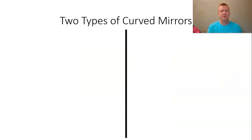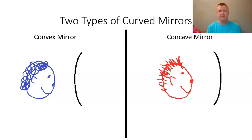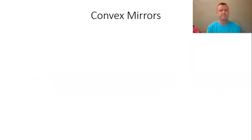The two types of curved mirrors are like the two sides of the spoon. When you're looking at the back of the spoon where it's curving out towards you, that's called a convex mirror. And then if you're looking inside the spoon where it's curving away from you, kind of like you're looking into a cave, it's called a concave mirror.